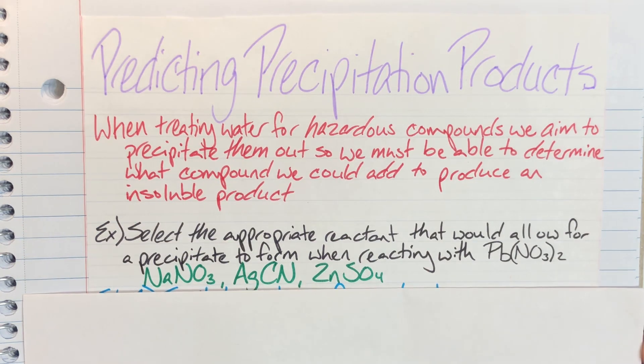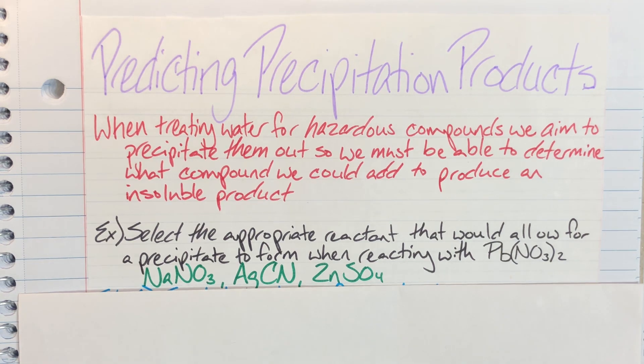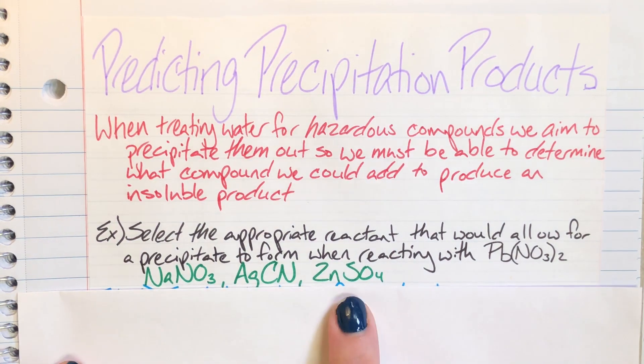We have our first example here which states: select the appropriate reactant that would allow for a precipitate to form when reacting with lead(II) nitrate. As a reminder, precipitate means that I am going to be forming an insoluble compound, so I need to figure out between these three options which would be the best choice.